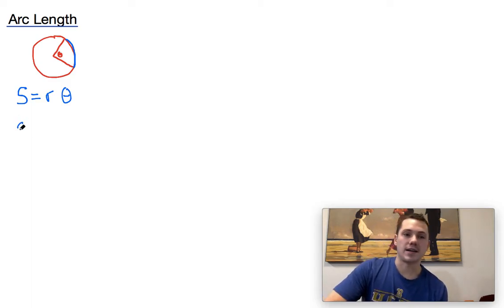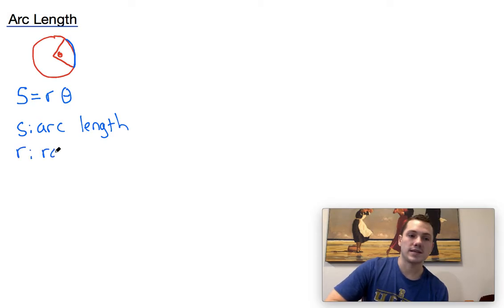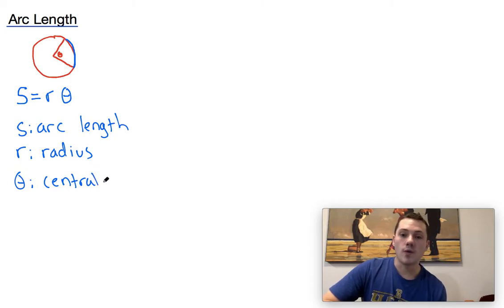It's just three variables. In here, S represents arc length, R represents radius, and theta represents the central angle. And I should note here that theta is always in radians. It's never in degrees.